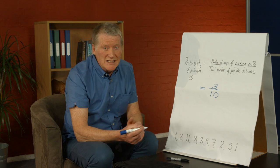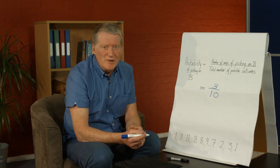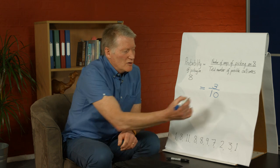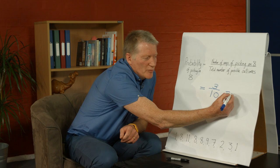So now we've defined it theoretically. The probability of picking the card number 8 is 3 out of 10. You could write that as 0.3 as well.